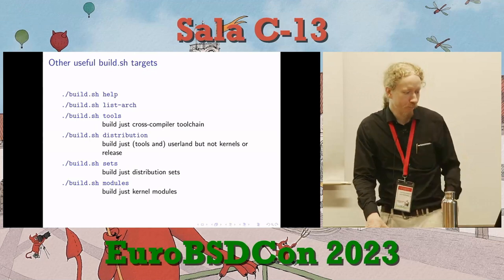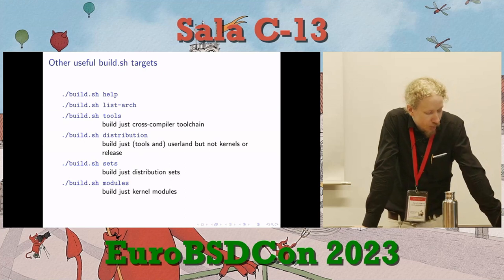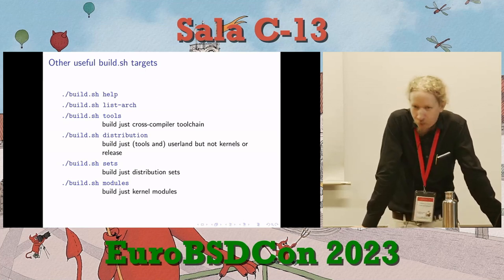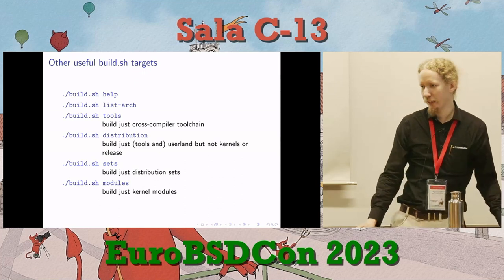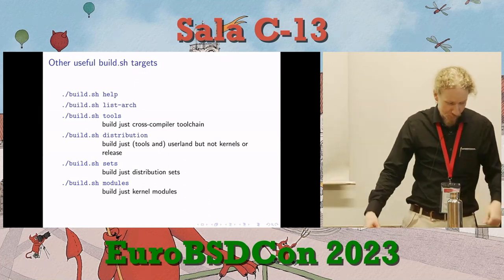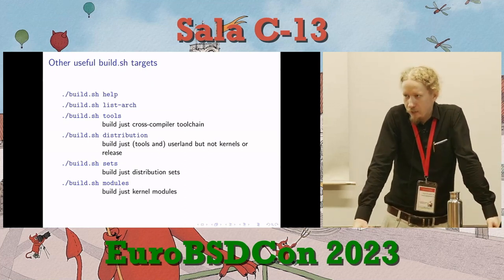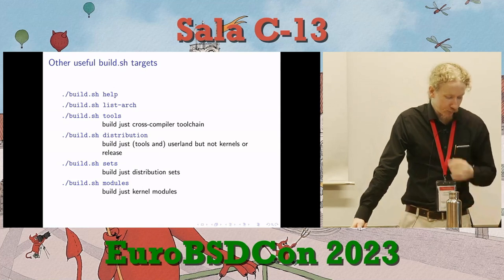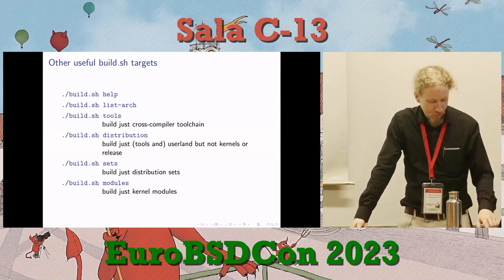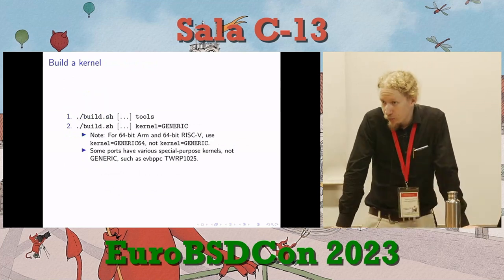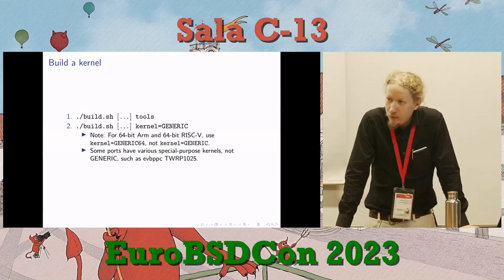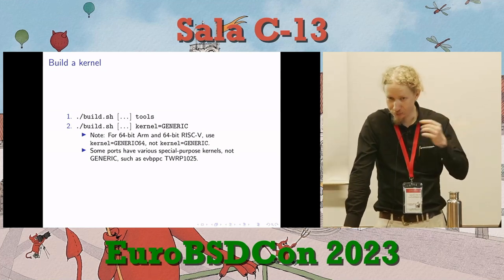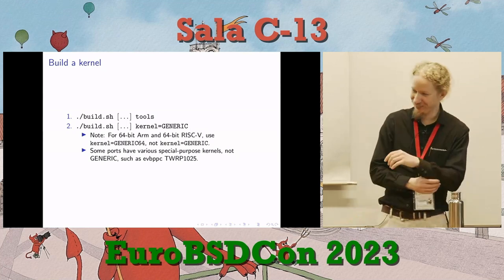Some other useful targets from build.sh: 'help' if you forget how to do anything; 'listarch' to see architecture options; 'tools' to build just the cross-compiler toolchain — handy if you just want an ARM compiler. You can use godbolt.org if you're just playing around with seeing how compilers produce output, but it's handy to have a whole toolchain sometimes. 'distribution' produces just the userland without building any kernels, useful if you just want to update your userland with some changes.